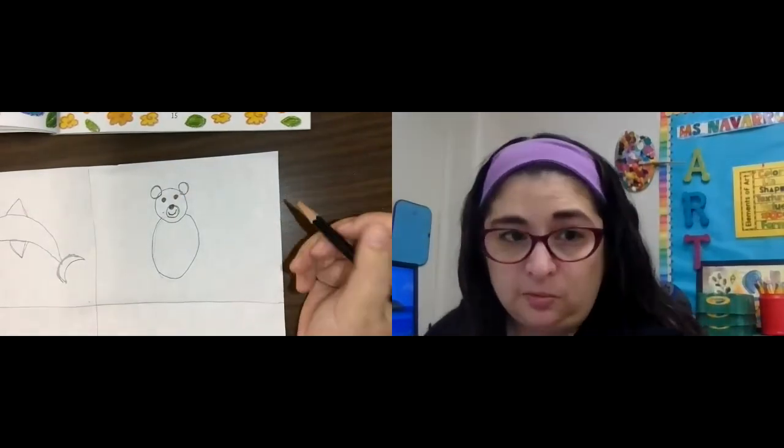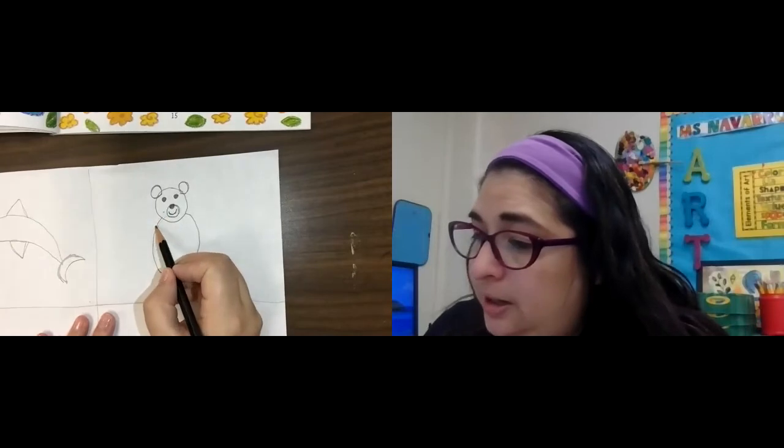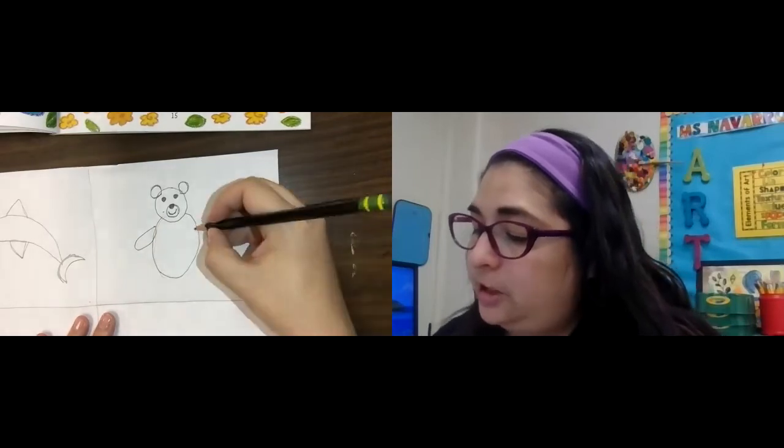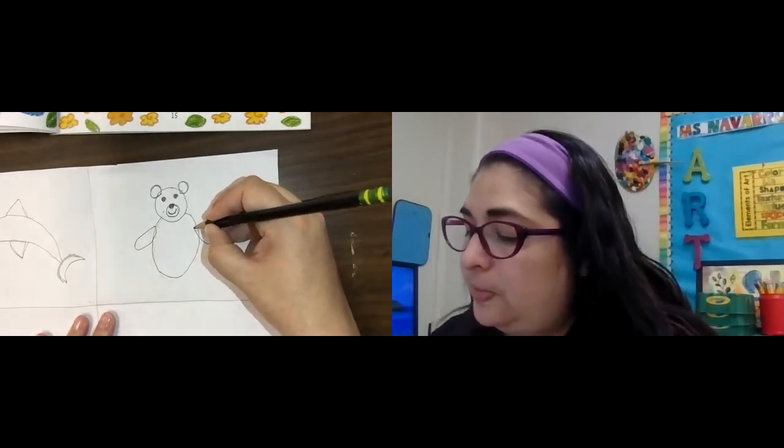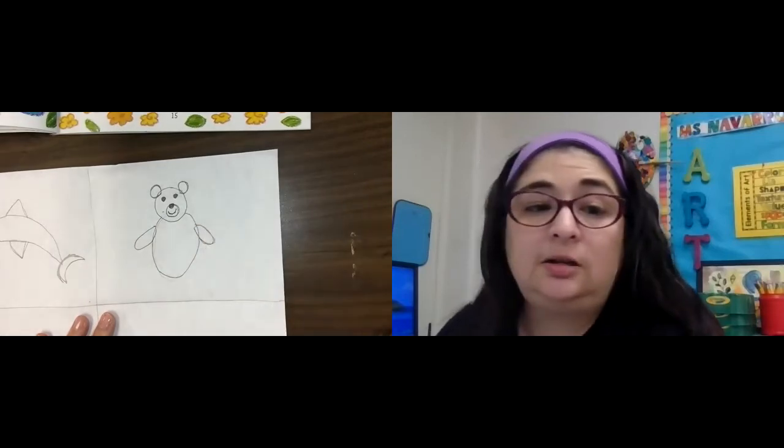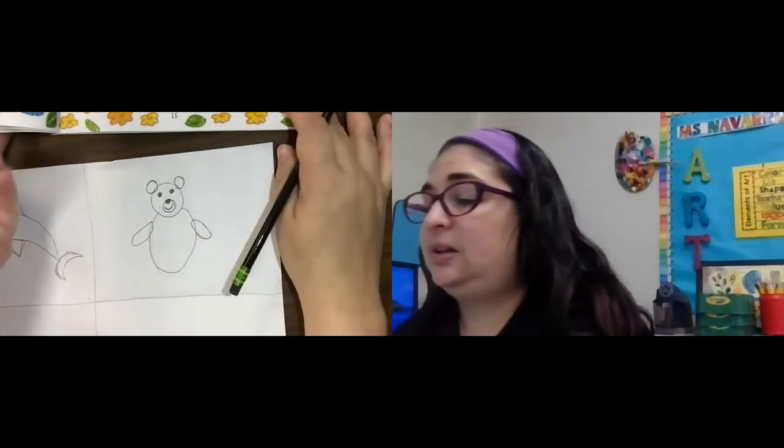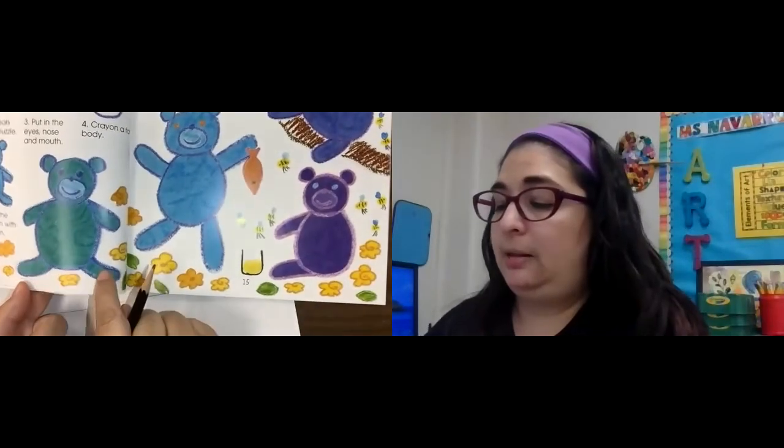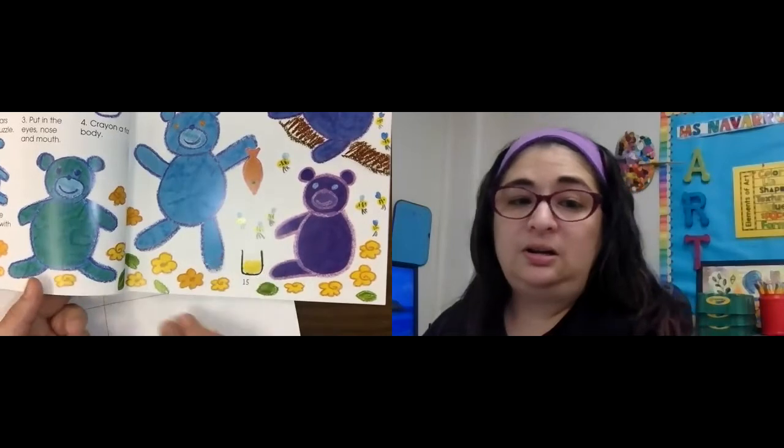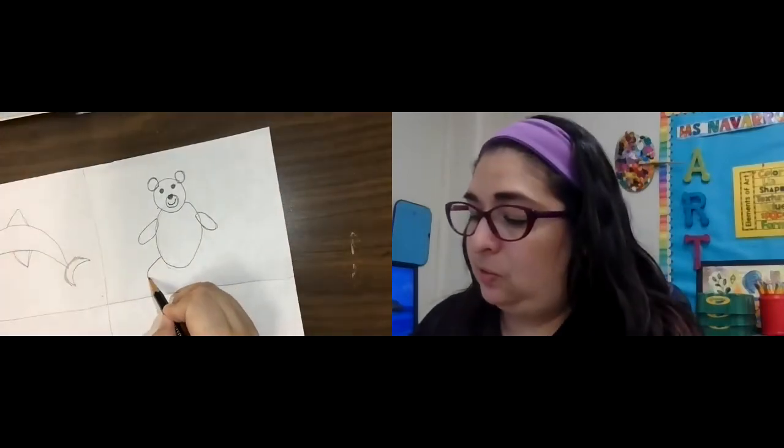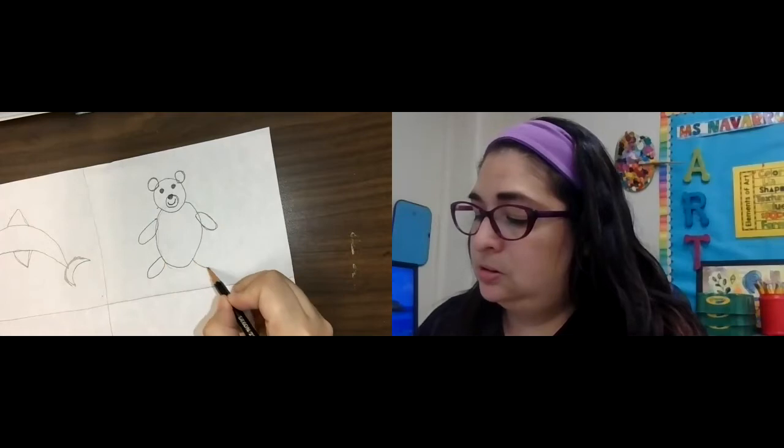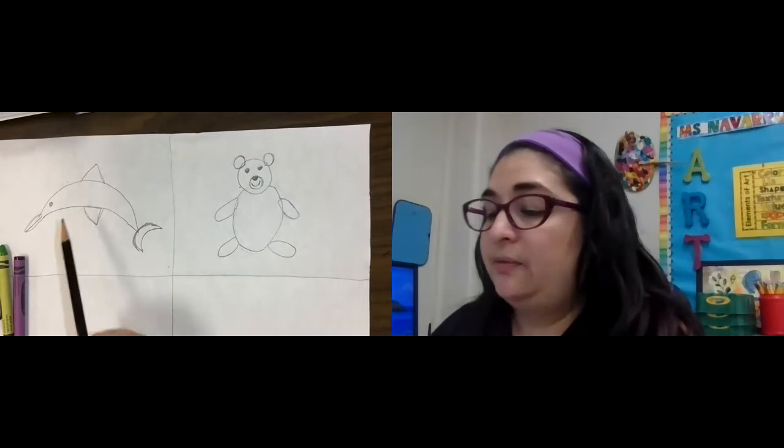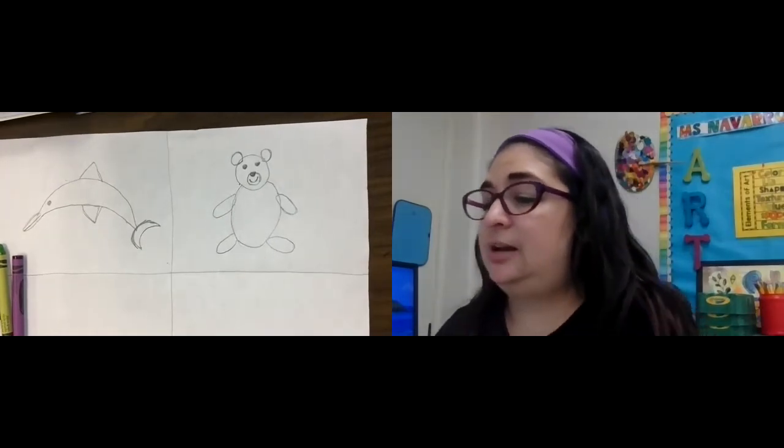Now all he needs is his arms. So I'm going to make an arm like this. This is kind of like an oval shape. Another thin oval. So that's one, two arms. And now he needs his feet. You can see his feet are kind of the same shapes. You can make them go out like this or in a little bit different direction. I think I'm going to make mine go like that. There we go. So now we have our dolphin and our teddy bear.